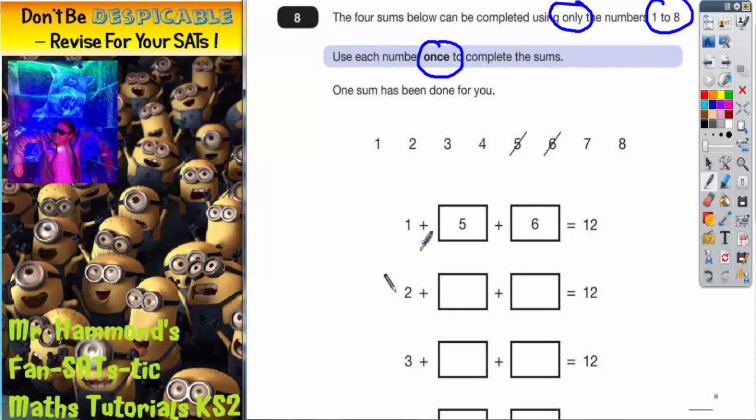So let's have a look at the one that's been done. We've got 1 plus 5 plus 6 equals 12, and they've crossed off the 5 and the 6 to make sure that we don't use those again.